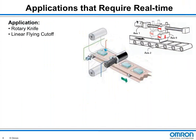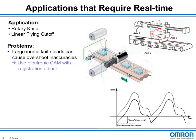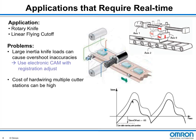Examples of machine control applications requiring real-time include the classic rotary or linear flying cutoff — a simple synchronization between a master and one or more slaves. As machine speed increases, movement of large inertia cutter slave axes can get erratic with traditional linear or S-curve acceleration profiles. Many control systems use electronic camming to create the smoothest and most efficient path. With many axes, wiring an external encoder master can become costly without a network.